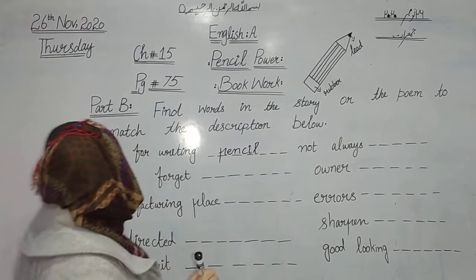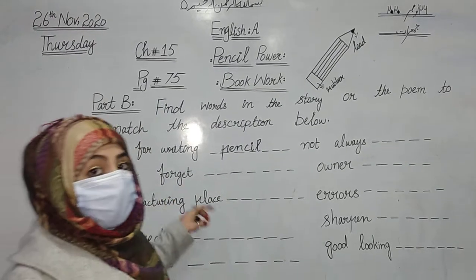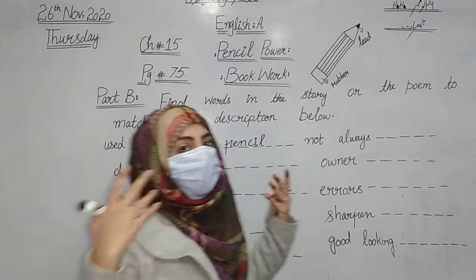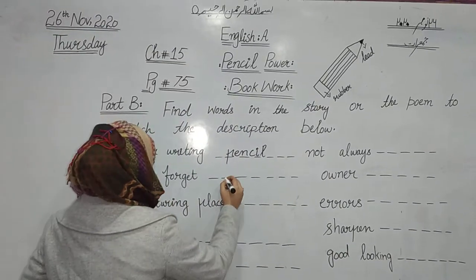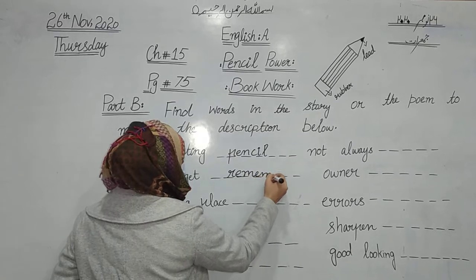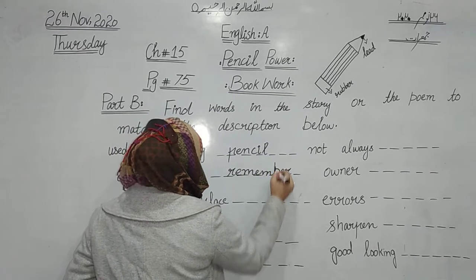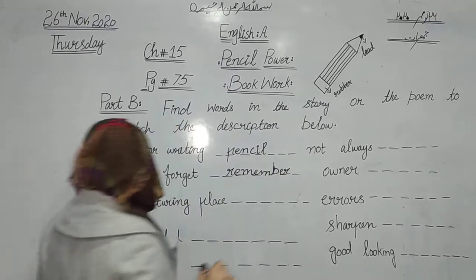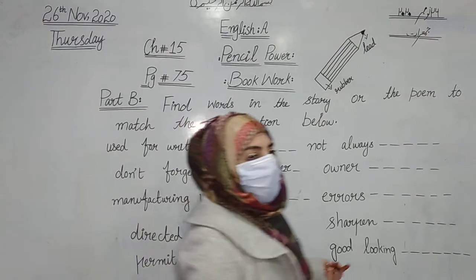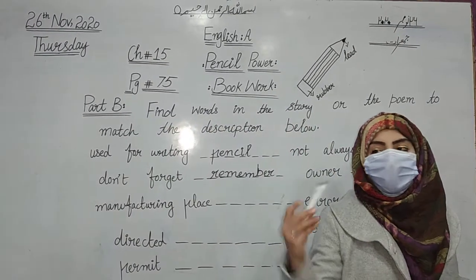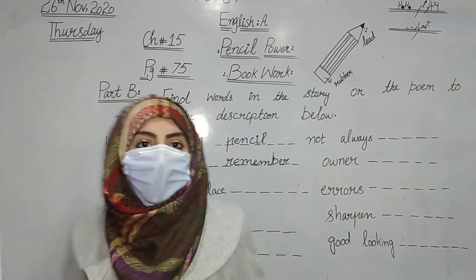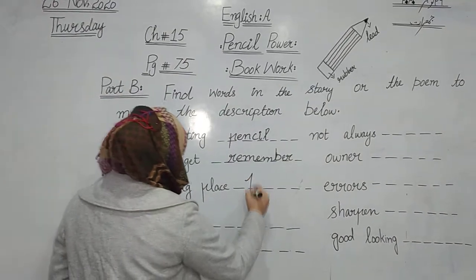The second is: don't forget. Aise cheez jise ham nahin bhulte — something we always remember. So the answer is 'always' or 'remember'. And the manufacturing place is called 'factory'.